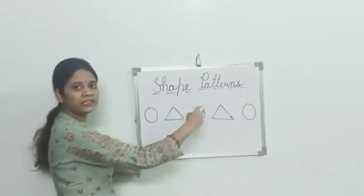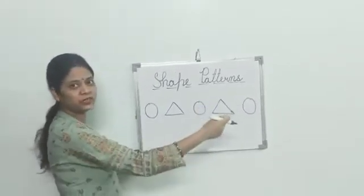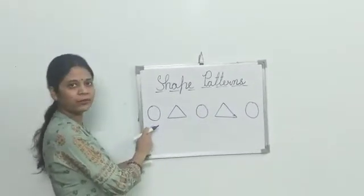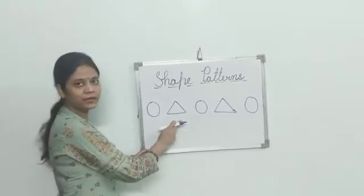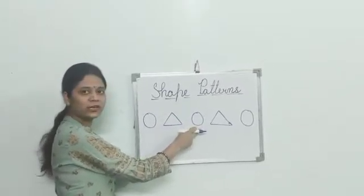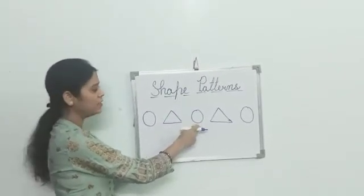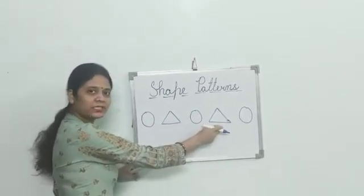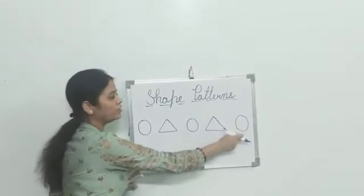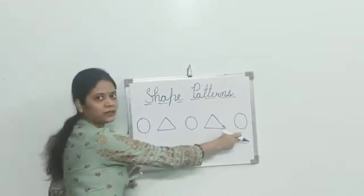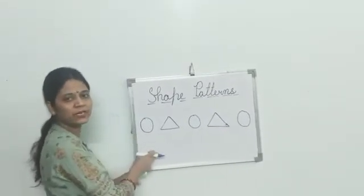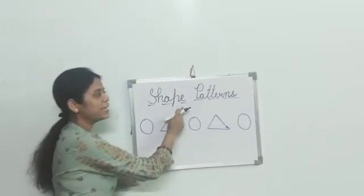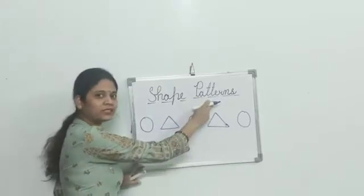Here, alternate shapes are repeating. First we drew a circle, then triangle. After triangle, circle came back. After circle, triangle came back. And this is the circle again. So what kind of pattern is this? It is a shape pattern.